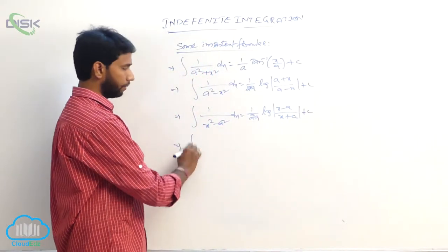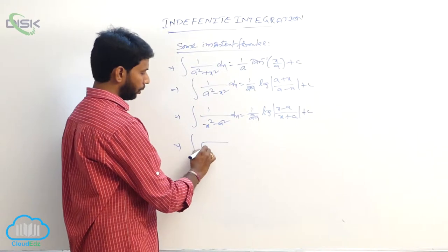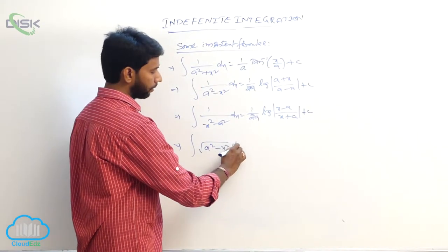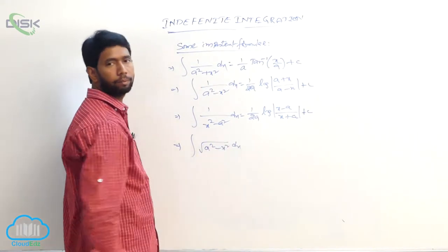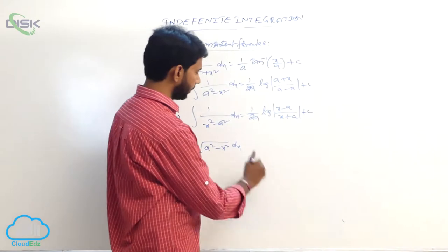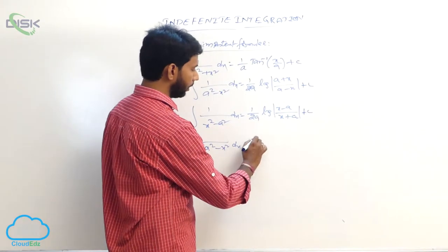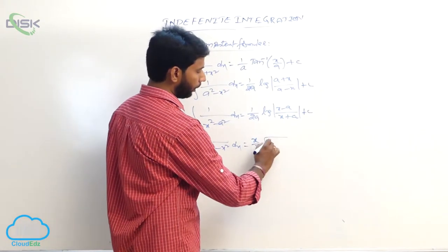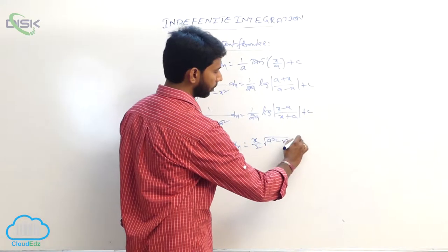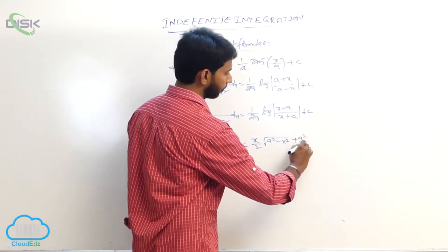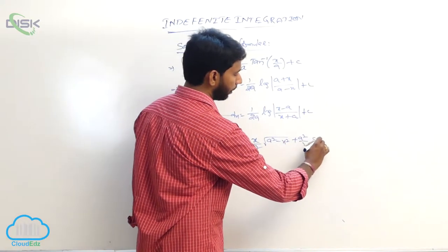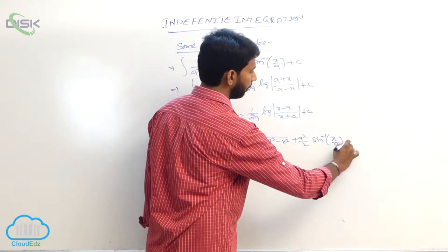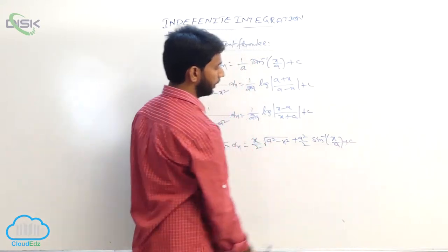Integral of root of a square minus x square dx is equal to x by 2 into root of a square minus x square plus a square by 2 into sin inverse of x by a plus some constant.